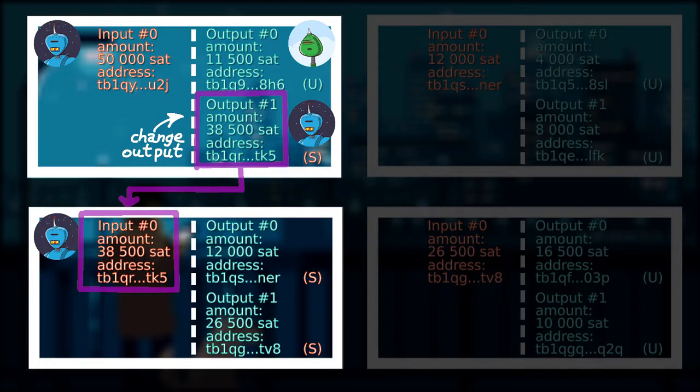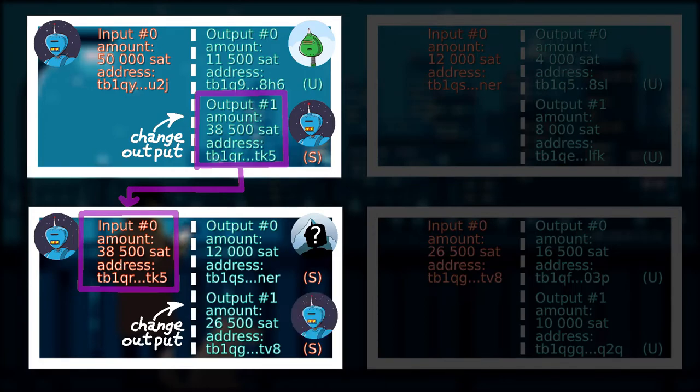And if we apply the same logic as our previous transaction, where the change output is positioned as output number one, then we could safely assume in this transaction, Q&A sent 12k SATs to someone and has 26.5k SATs left as change.